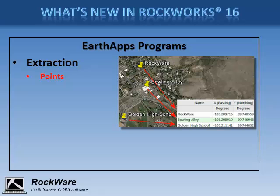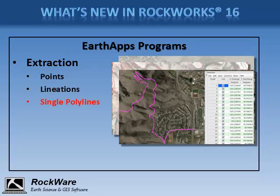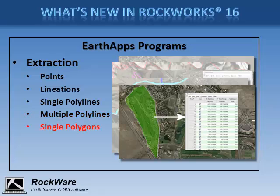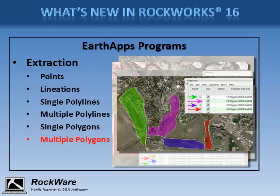You can extract points, lineations, individual polylines, multiple polylines — which are saved as separate RWDAT files — individual polygons, multiple four-point polygons, and multiple polygons with many vertices, which are stored in separate RWDAT files.